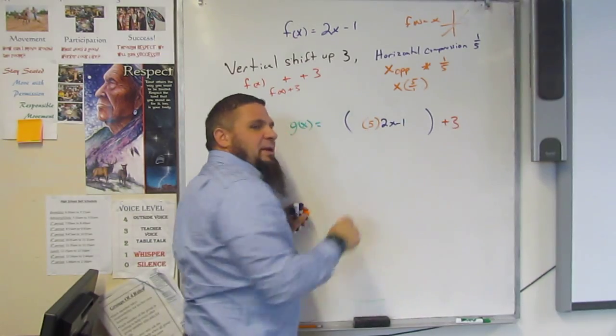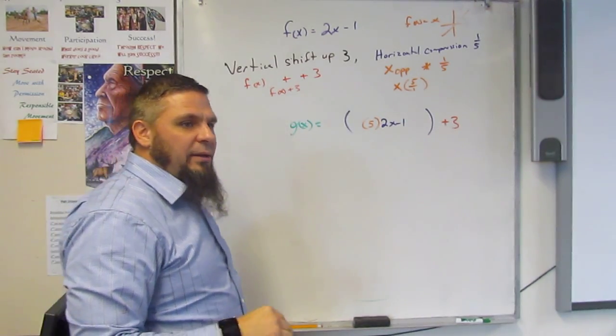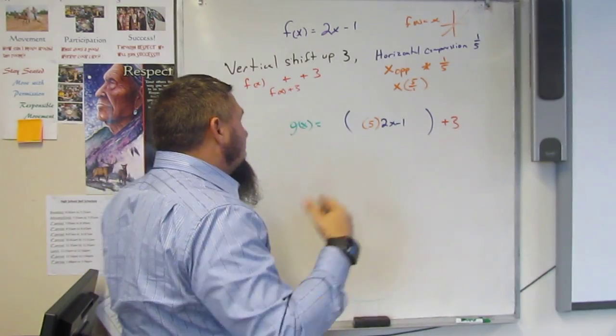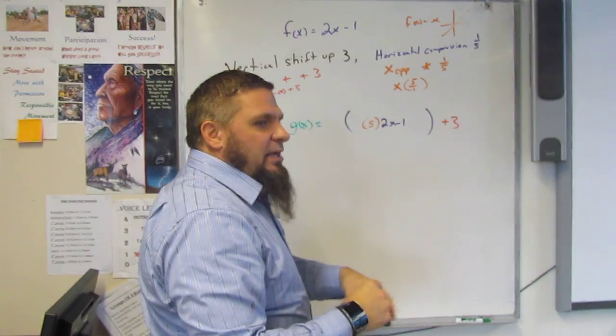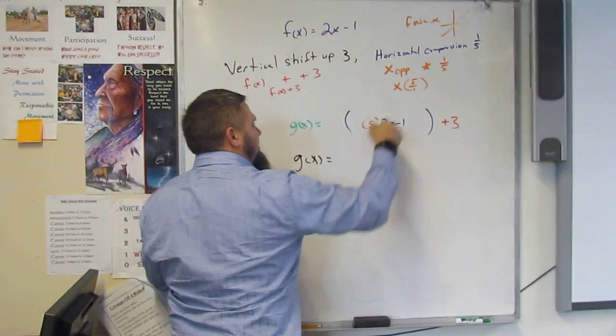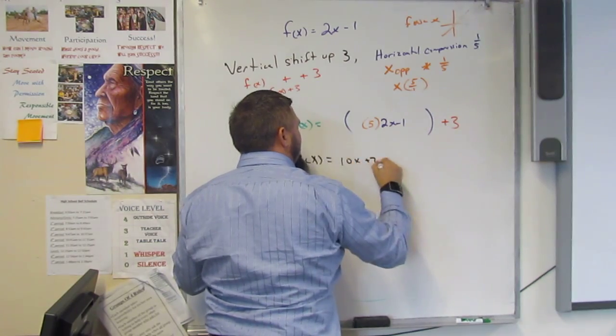And that's why I put that space there, times five. And that's how we deal with this. Now we can collect our like terms and come up with g of x is equal to 10x plus two. Because three plus negative one is two.